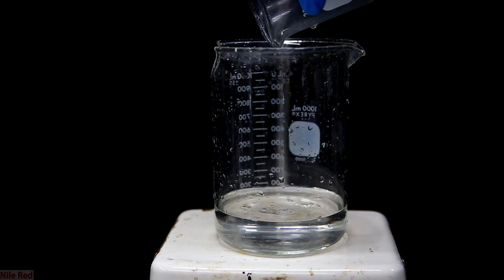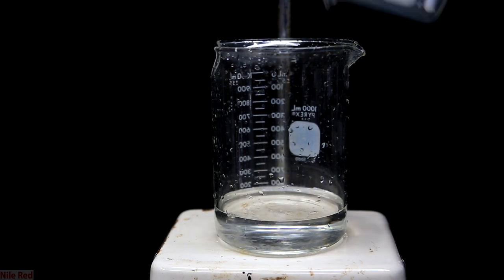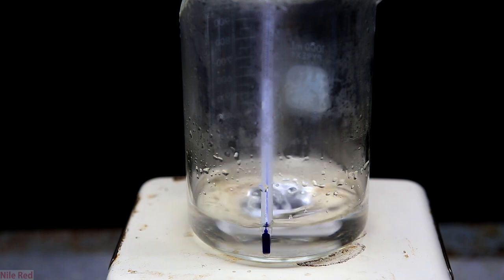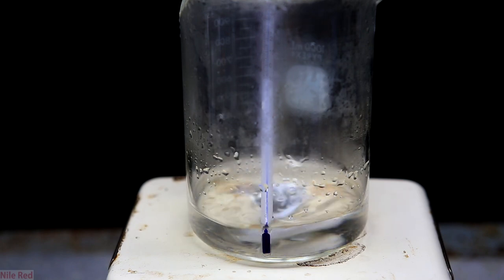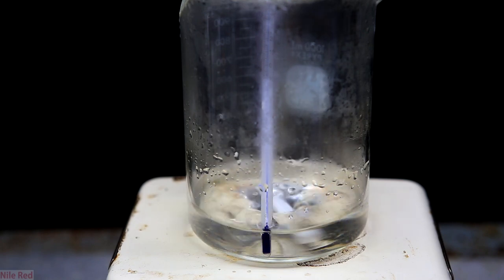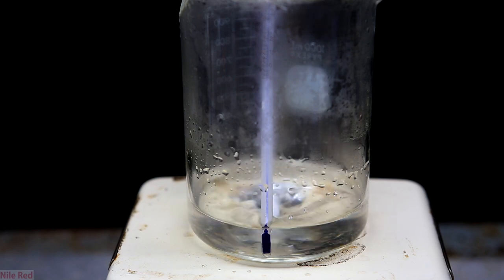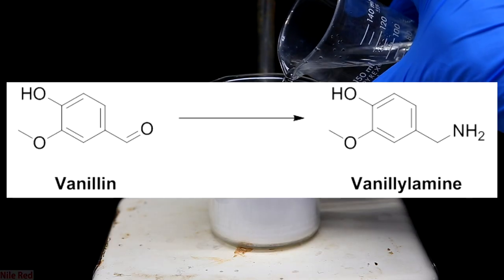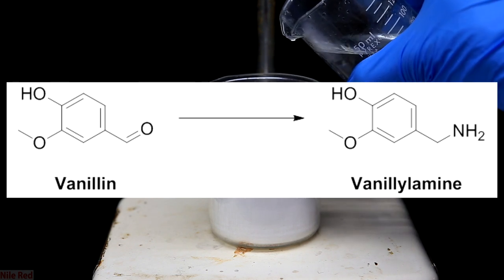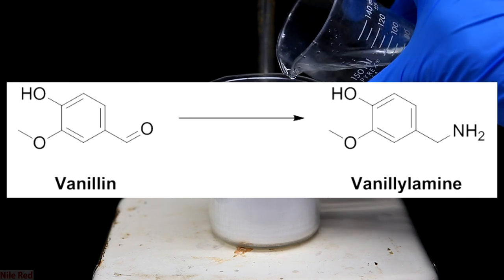The Leucart reaction is a little different than the palladium reaction because this one isn't just a reduction, it's a reductive amination. This is a pretty nifty reaction and I plan to use it on vanillin to make vanillylamine. Without going into too much detail, we're swapping this double bonded oxygen with a single bonded nitrogen.